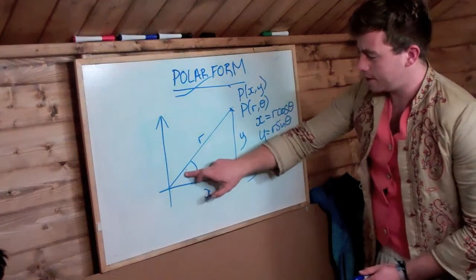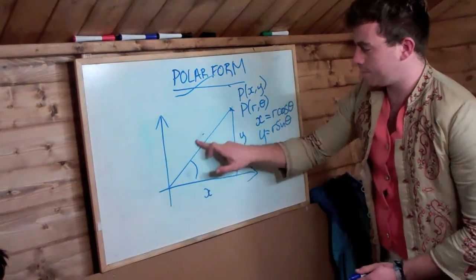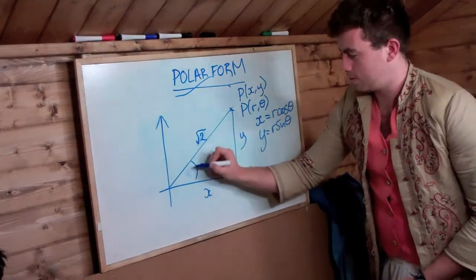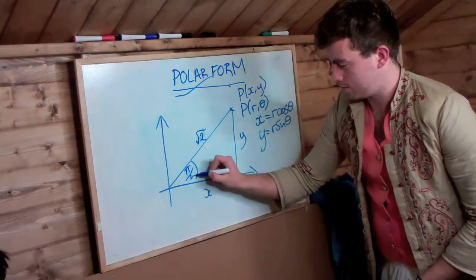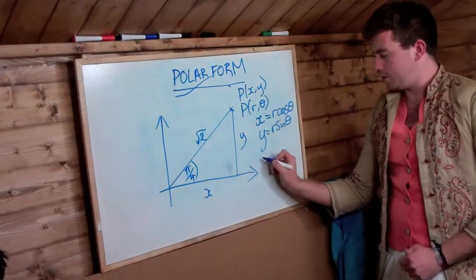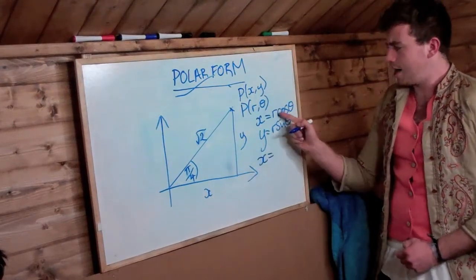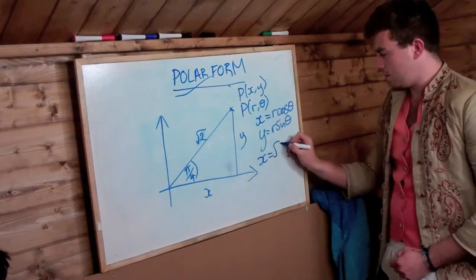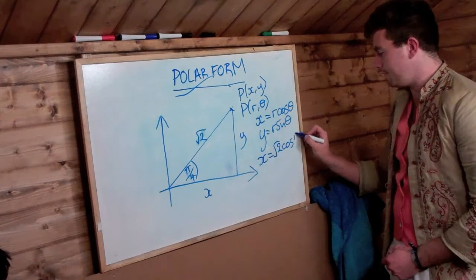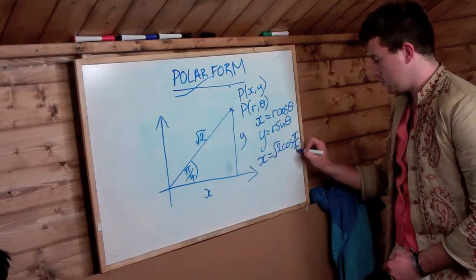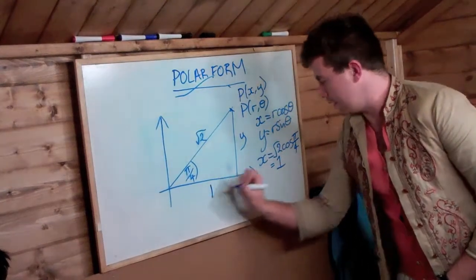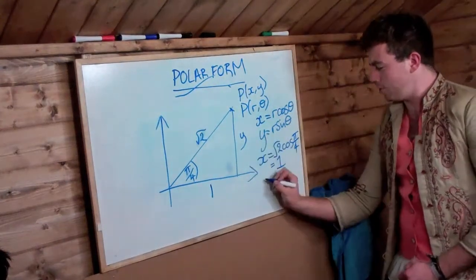Let's take theta to be pi by 4 and r to be root 2. So, to get the x value, you would use r as root 2 cos theta, which is pi by 4. And this is equal to 1. Therefore, x value is 1.